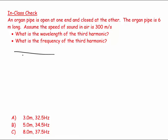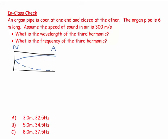So let's visualize. Here we have the organ pipe and it's closed at one end. If I imagine drawing a wave pattern inside, it needs an antinode at one end because it's open, and it needs a node at the other end because there's a piece of solid material there. And there's the simplest waveform that I can fit into that length of tube.